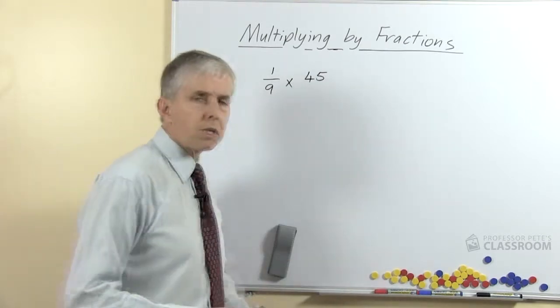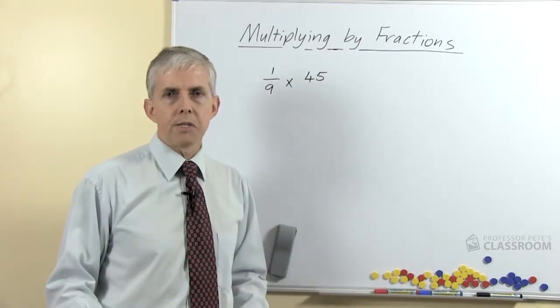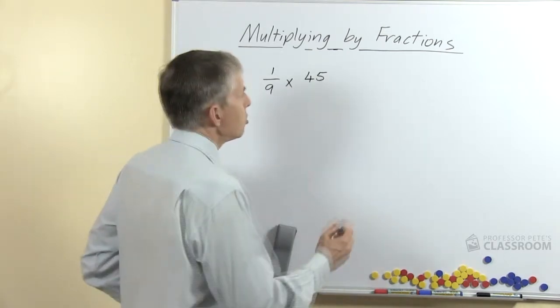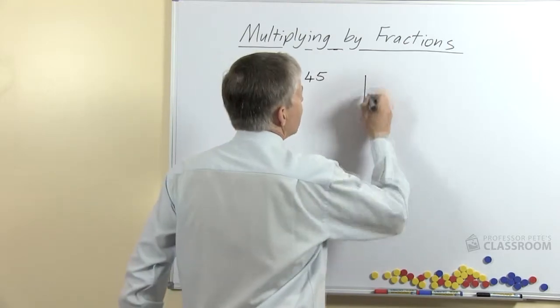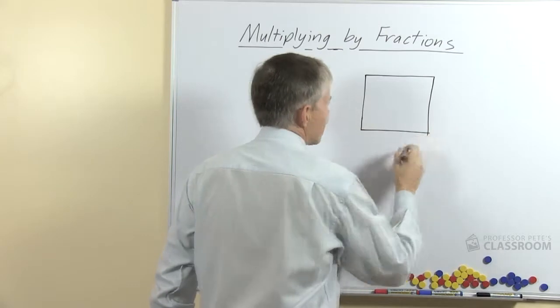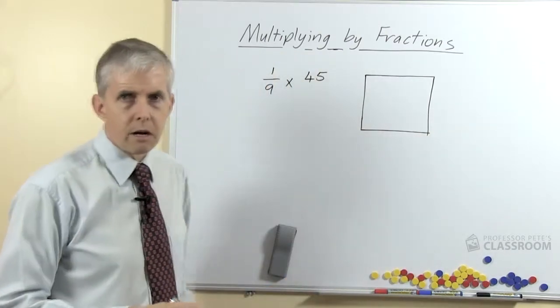So here's my suggestion: give the students large pieces of paper and felt pens or crayons or something like that that they can draw with. Ask them to draw a shape, and for 9ths it's probably easiest if you say draw a square, because that's going to make it easy to make it into 9 pieces.